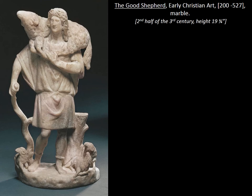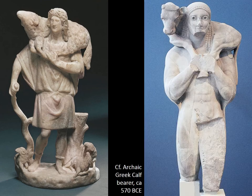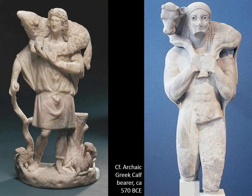There are elements that are even more familiar. Here I'm comparing it to an archaic Greek calf bearer, and if you notice, it's pretty much the same pose — with the animal over his shoulders and his hands resting there. Except the archaic calf bearer is bringing this calf for sacrifice. So it's really interesting to look at this early sculpture and think about the way it incorporates pre-existing styles while completely changing the meaning.